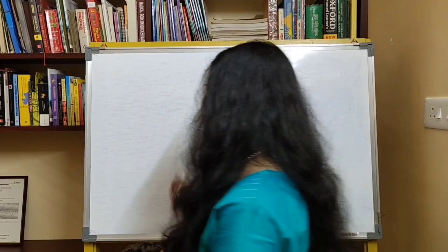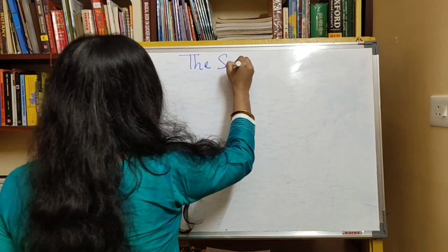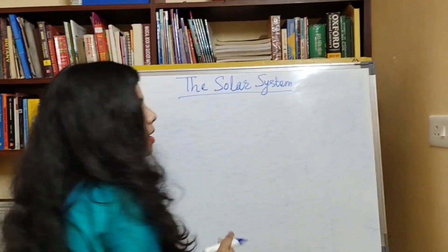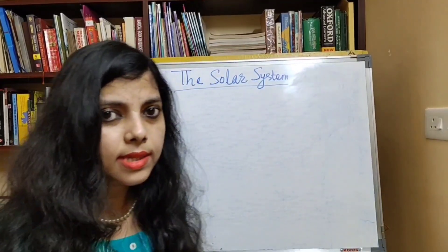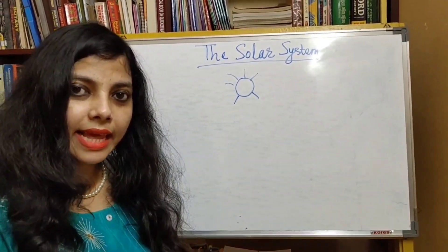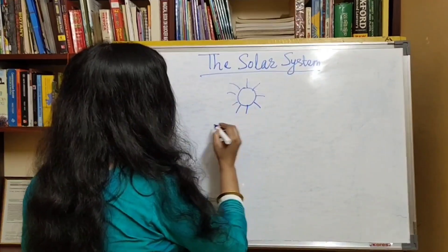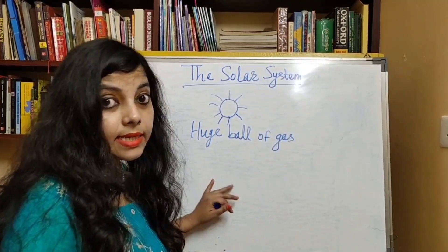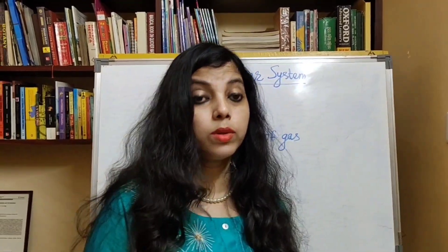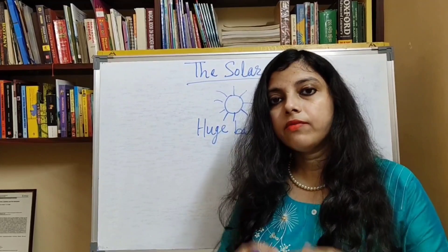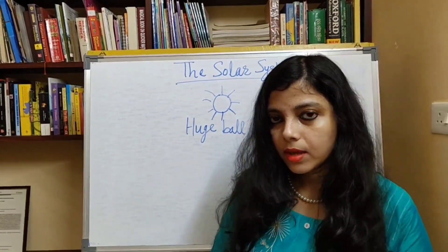Now everybody knows about the sun. So let me write the chapter name: The Solar System. Every time you draw any scenery or any art, you draw a sun — how does it look? Like this. Sun is a huge ball of gas. It has light and heat of its own, so it is the main source of energy on the earth. Every day we get light and heat from the sun.